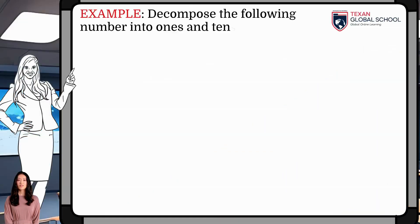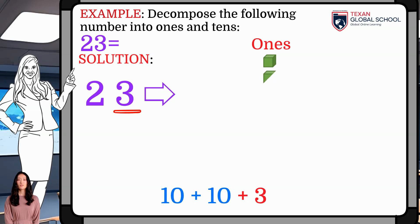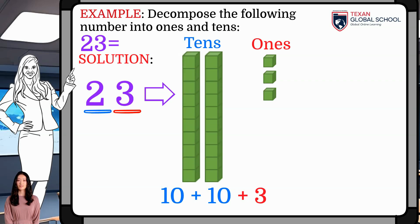As a first example, decompose the number 23 into 1s and 10s since it has 2 digits. So, 23 has 3 1s and 2 10s.